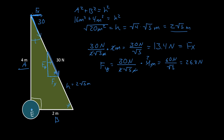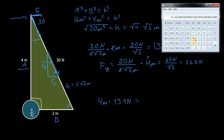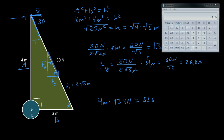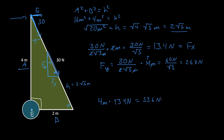If we multiply the perpendicular distance of 4 meters by the force in the x direction at the top point, it gives us how much this body wants to rotate. It's basically a simple seesaw. So 4 meters times 13.4 Newtons equals 53.6 Newton-meters. That is the moment — remember, the moment equals the force times the distance.